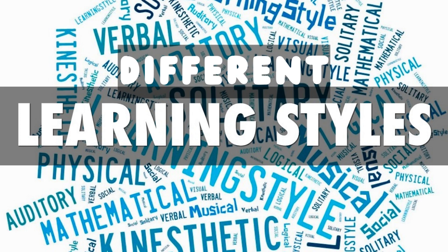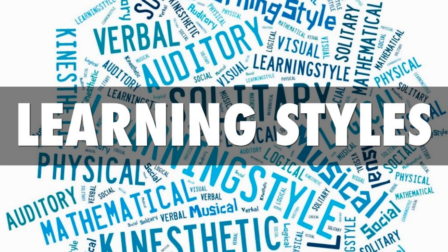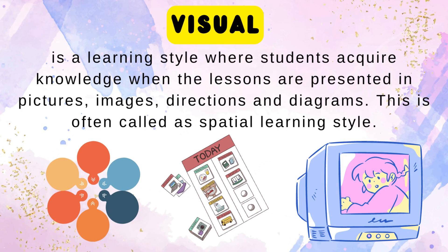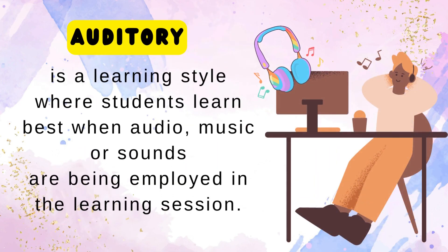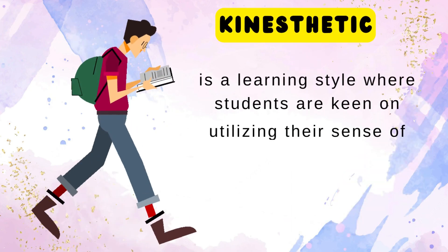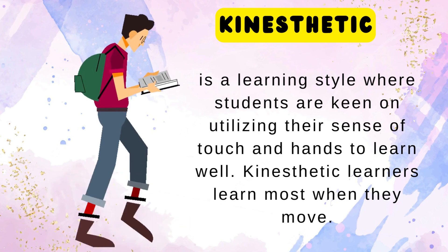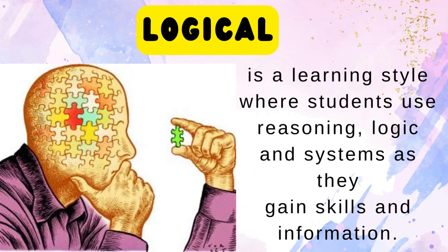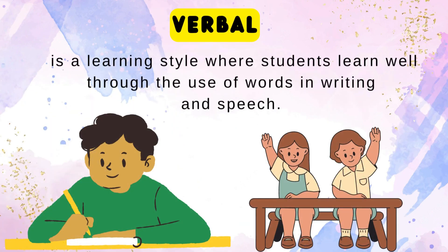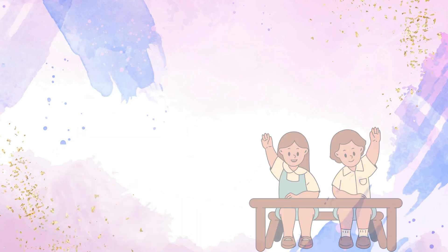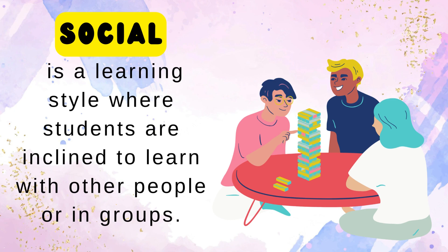There are many types of learning styles. It would help if you can identify yours so you can be mindful of how you learn best. Visual is a learning style where students acquire knowledge when the lessons are presented in pictures, images, directions, and diagrams — this is often called a spatial learning style. Auditory is a learning style where students learn best when audio, music, or sounds are being employed in the learning session. Kinesthetic is a learning style where students are keen on utilizing their sense of touch and hands to learn well — kinesthetic learners learn most when they move. Logical is a learning style where students use reasoning, logic, and systems as they gain skills and information. Verbal is a learning style where students learn well through the use of words in writing and speech. Social is a learning style where students are inclined to learn with other people or in groups.